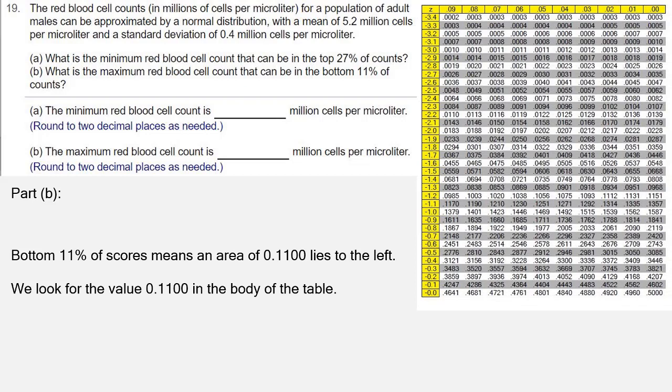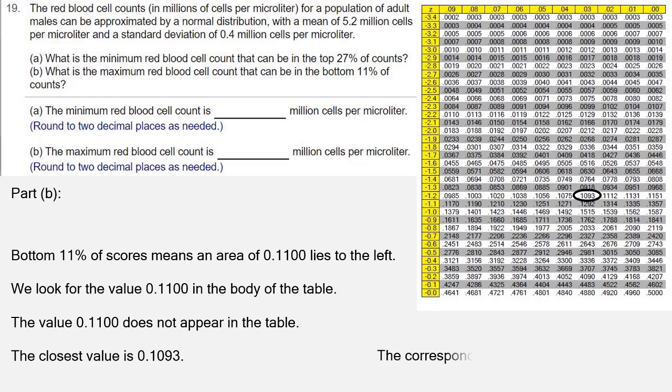We look for 0.1100, and it's not there. So we look for the value closest to it, which is 0.1093. That corresponds to a z-score of negative 1.23.